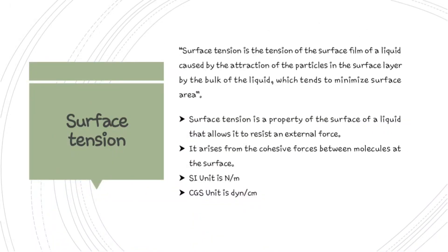We will start with what is meant by surface tension. Surface tension is a tension of the surface film of a liquid caused by attraction of particles in the surface layer by the bulk of the liquid, which tends to minimize surface area. It is a surface phenomenon which tries to minimize the surface area. Surface tension is the property of the surface of a liquid that allows it to resist an external force. This surface tension arises from the cohesive force between molecules at the surface. The SI unit for surface tension is newtons per meter and CGS unit is dynes per centimeter.